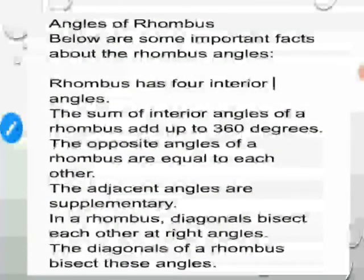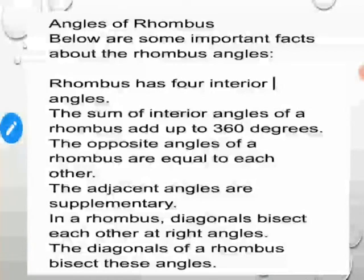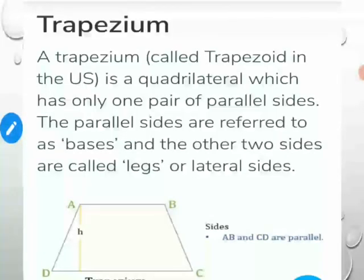To summarize rhombus properties: a rhombus is a parallelogram whose all adjacent sides are equal. It has four interior angles that sum to 360 degrees. Opposite angles are equal; adjacent angles are supplementary. The diagonals bisect each other at 90 degrees (like a square), and the diagonals bisect the internal angles.